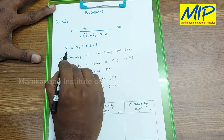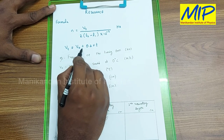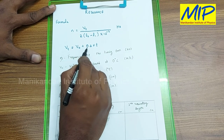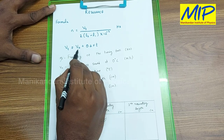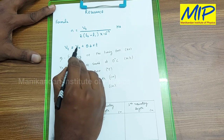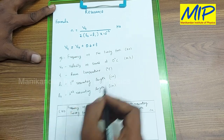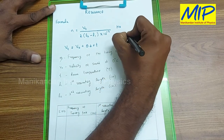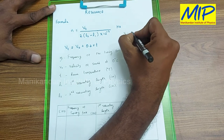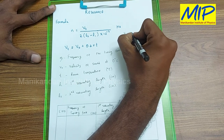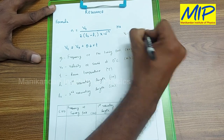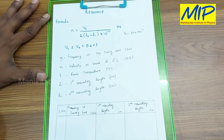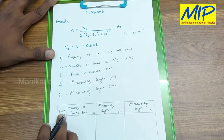In this case, V of T equals V0 plus 0.6 into T. V0 is the velocity of sound at 0 degrees Celsius. V0 equals 330 meters per second — this is the velocity of sound at 0 degrees Celsius.